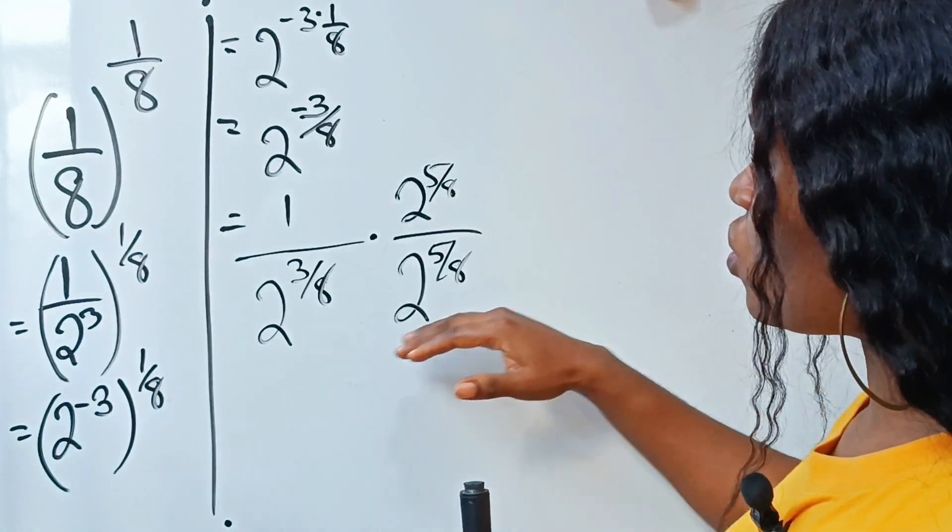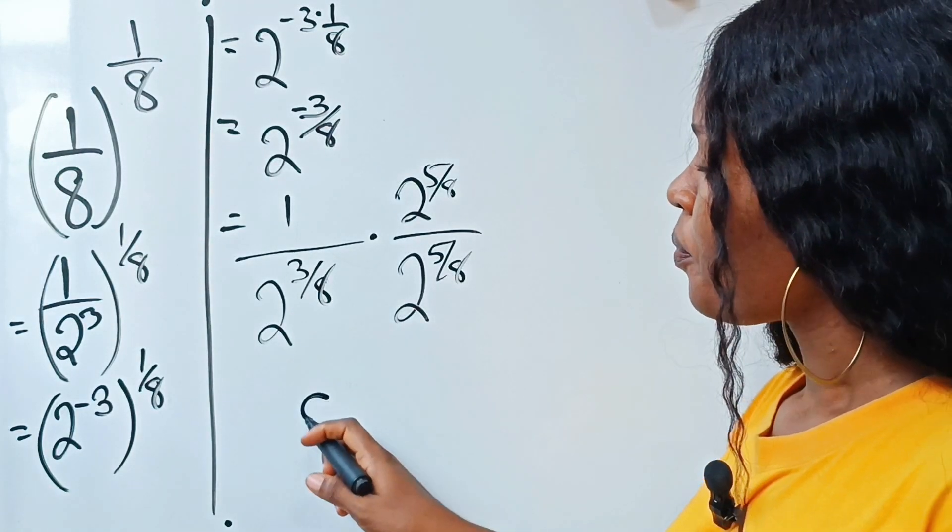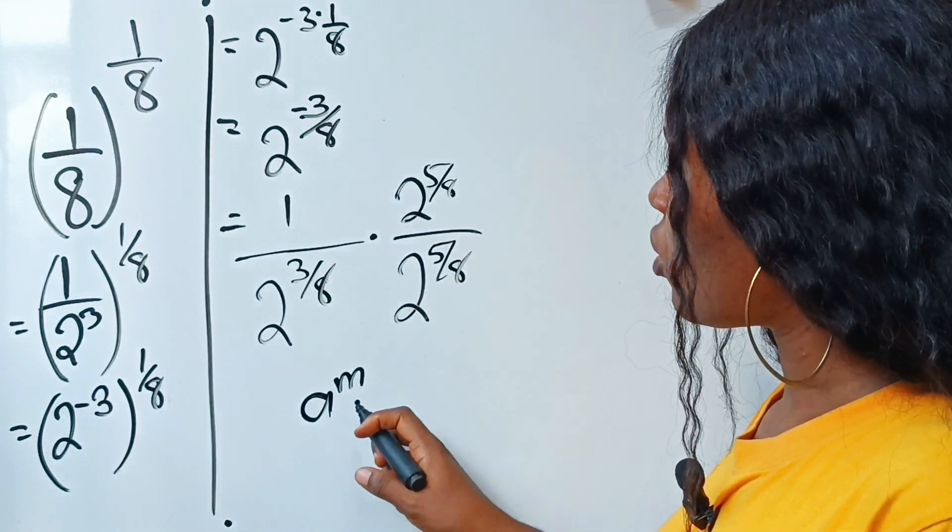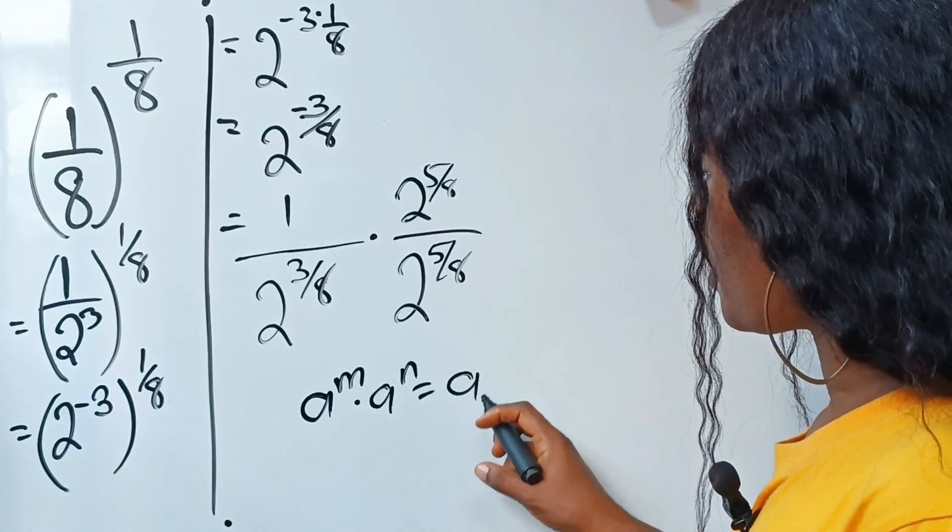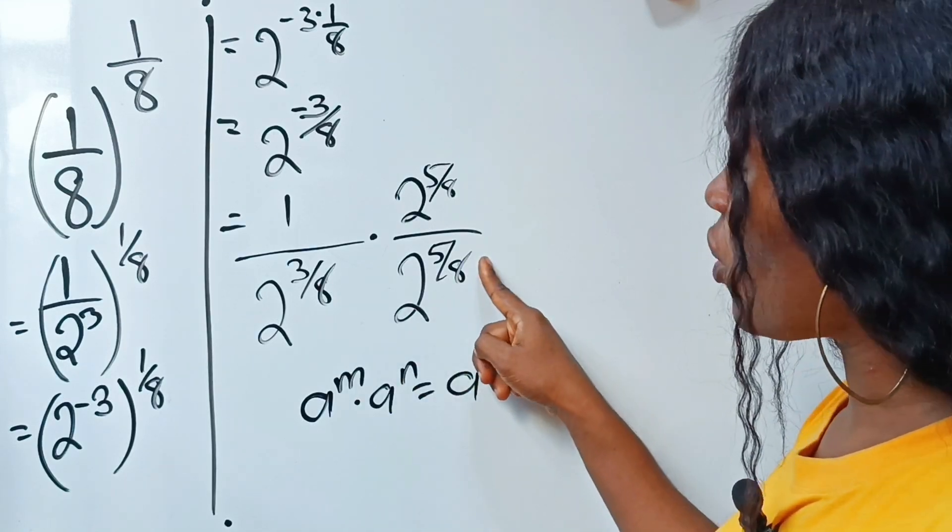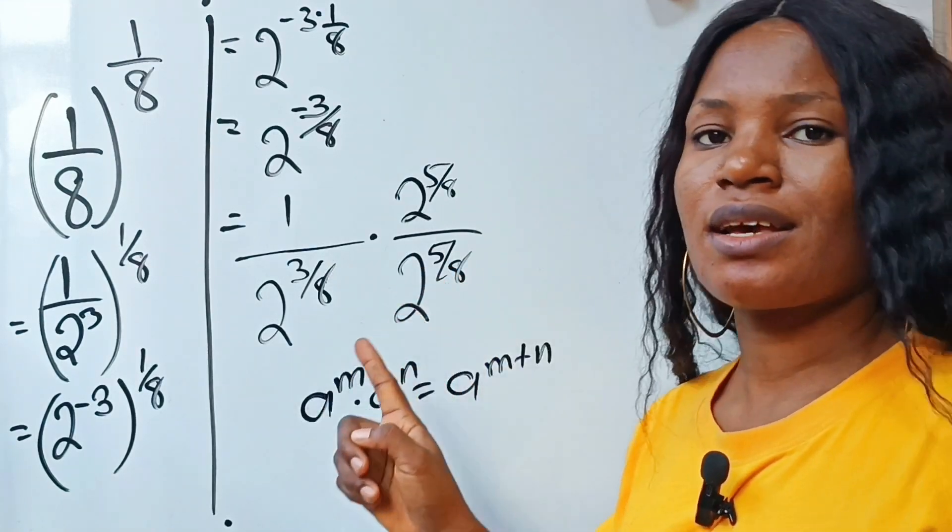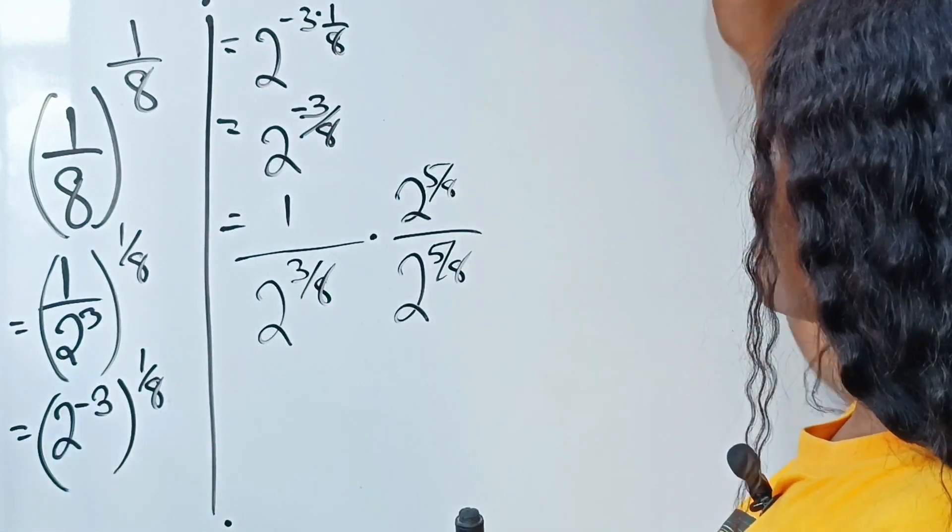When I do that, I'm going to introduce a law. There is a law in exponents that says that a to the power of m multiplied by a to the power of n is equal to a to the power of m plus n. So if I should add this to this, I'm going to have 8 over 8, which is the same thing as 1.